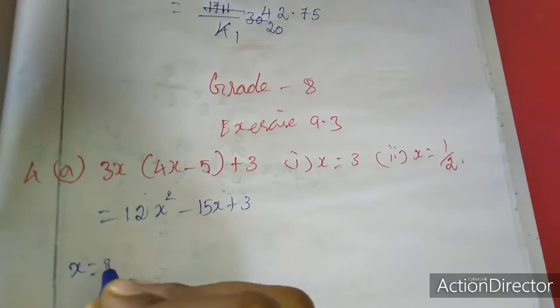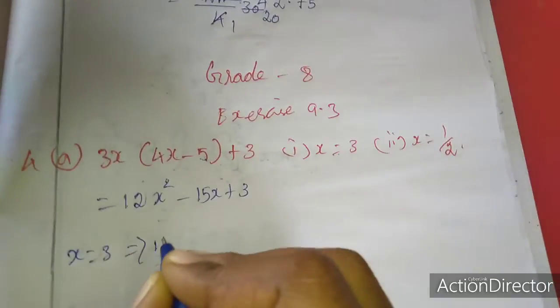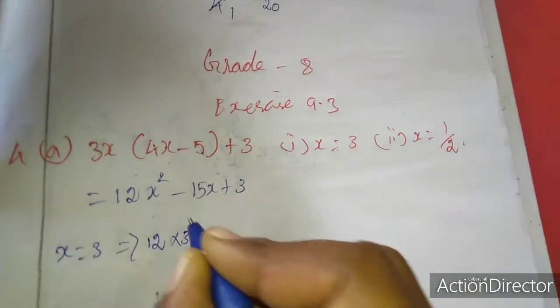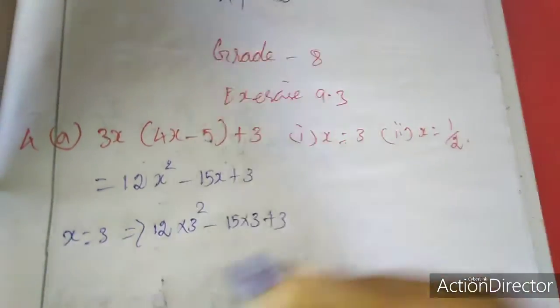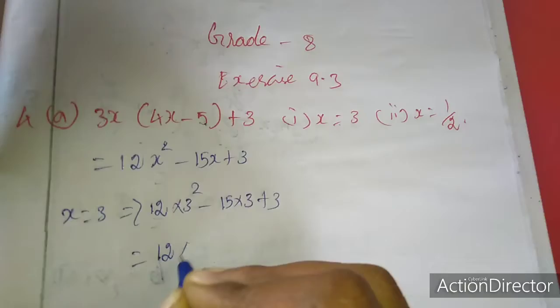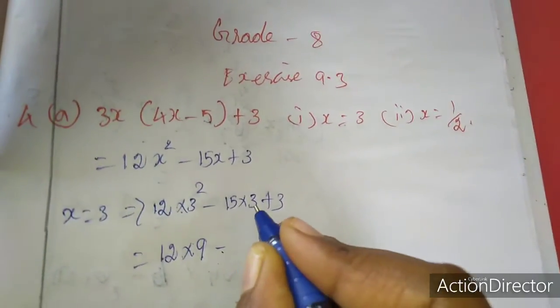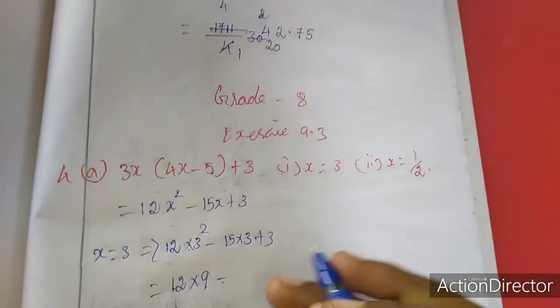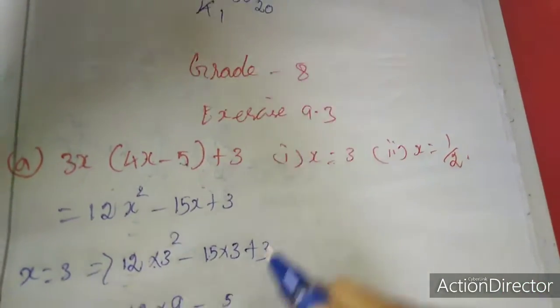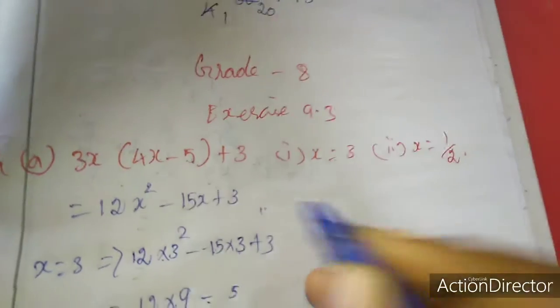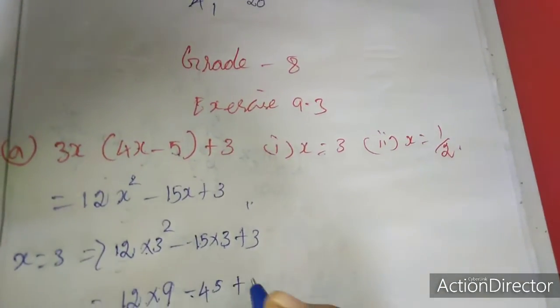Now I will substitute x equal to 3, which implies 12 into x square, so 3 square minus 15 into 3 plus 3. So 12 into 3 square is 9, minus 15 into 3. 3 times 5 is 15, carrying 1, 1 plus 3 is 4, so 45 plus 3.